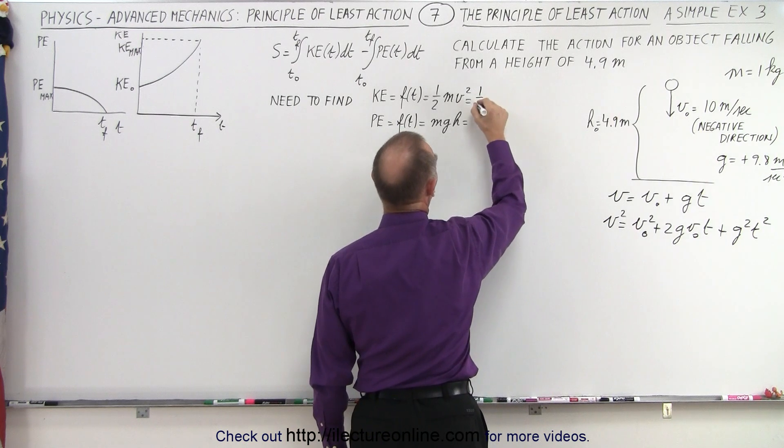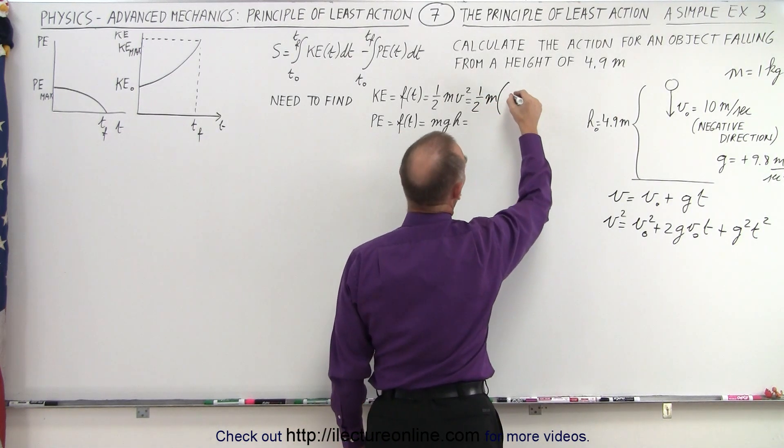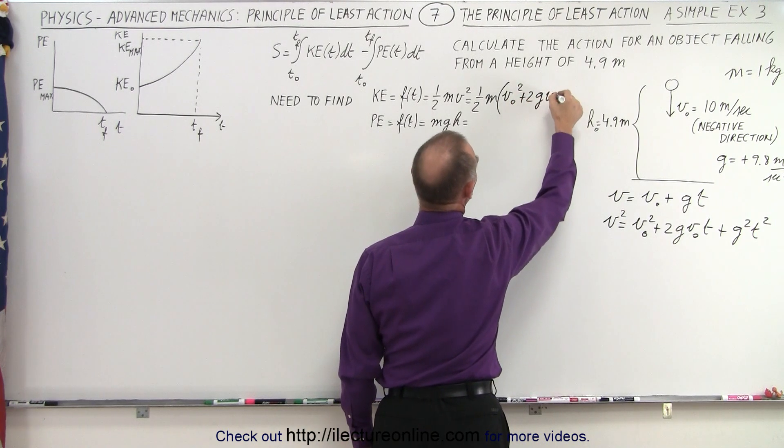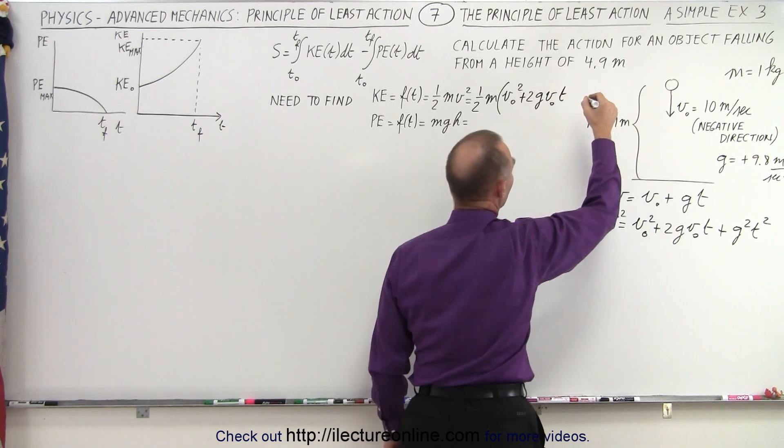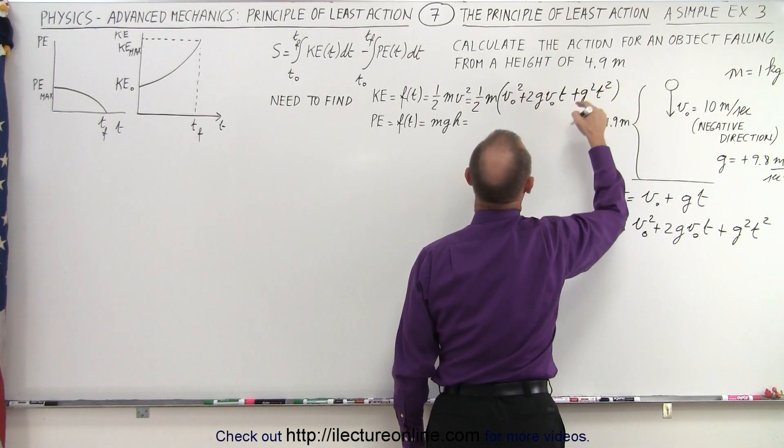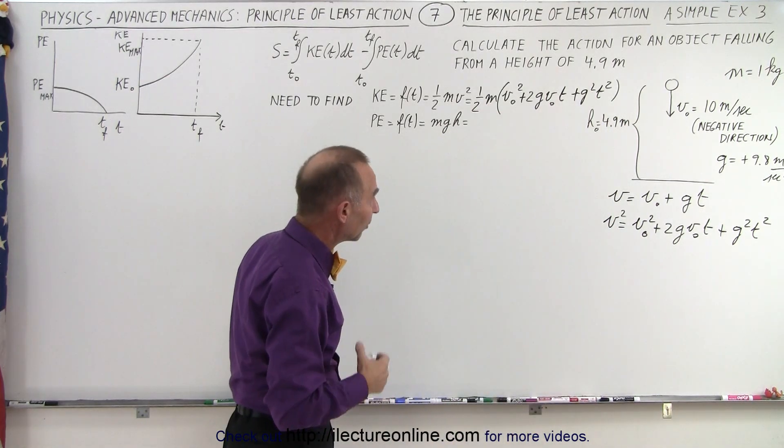So plugging that in here, we get one half times the mass times the quantity v initial squared plus 2g v initial times t plus g squared t squared, and that will be the kinetic energy while it's on its way down as a function of time.